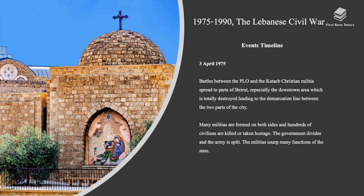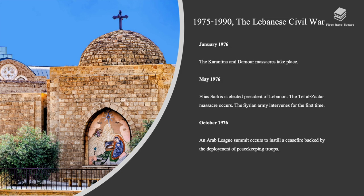In April 1975, battles between the PLO and the Kataeb Christian militia spread to parts of Beirut, especially the downtown area, which was totally destroyed, leading to a demarcation line between the two parts of the city. Many militias formed on both sides, and hundreds of civilians were killed or taken hostage. The government divided and the army split. In January 1976, the Karantina and Damour massacres took place. In May 1976, Elias Sarkis was elected president, the Tel al-Zaatar massacre occurred, and the Syrian army intervened for the first time. In October 1976, an Arab League summit instilled a ceasefire backed by the deployment of peacekeeping troops.